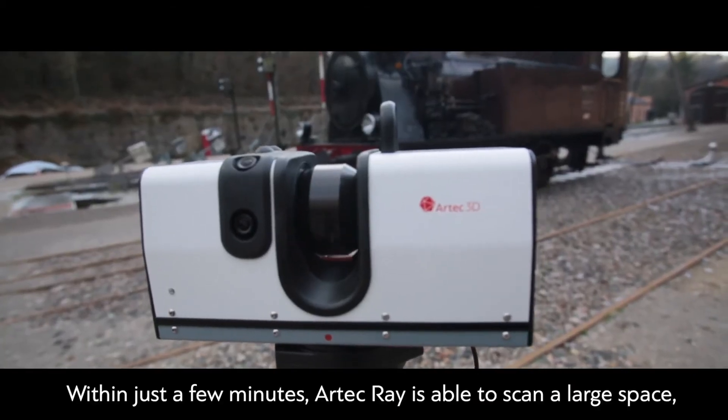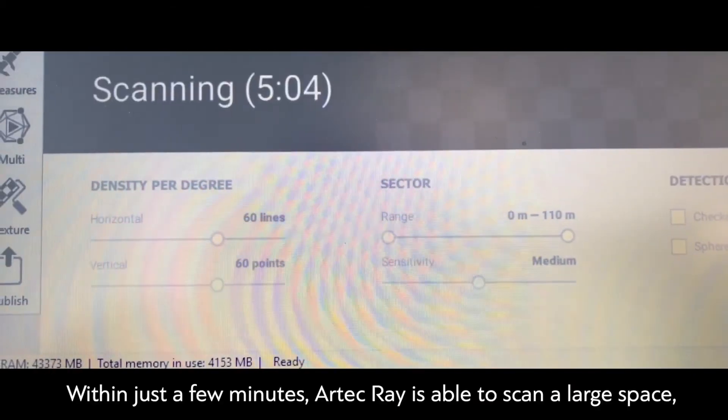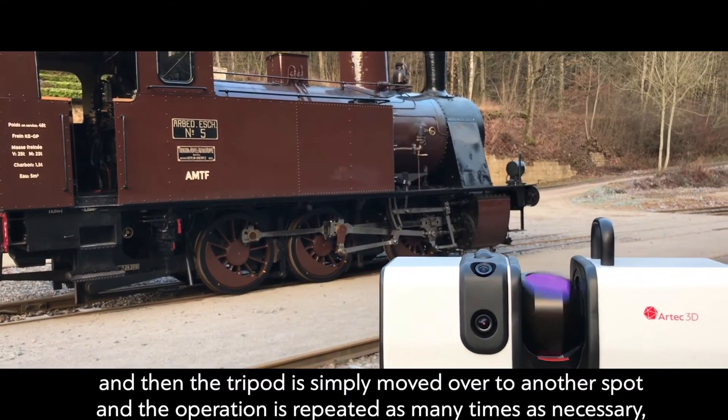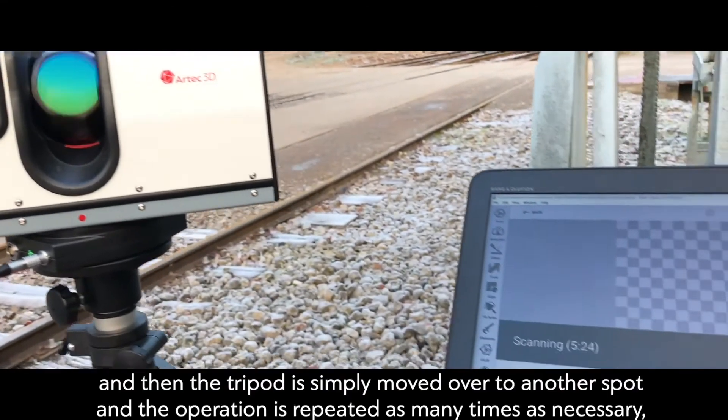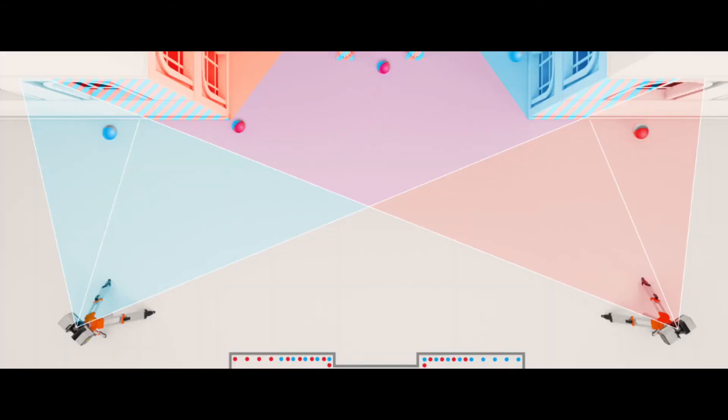Within just a few minutes, Artecray is able to scan a large space, and then the tripod is simply moved over to another spot, and the operation is repeated as many times as necessary, so that all the dead zones are scanned by Ray's laser beam.